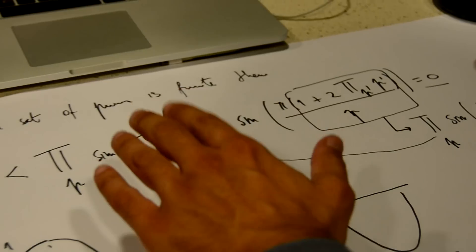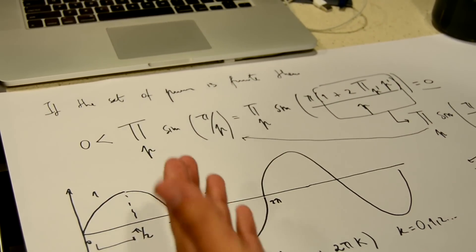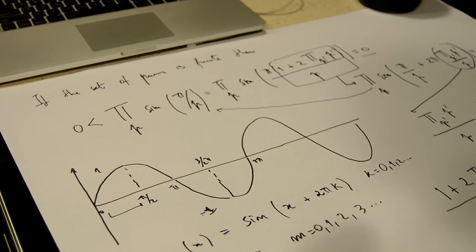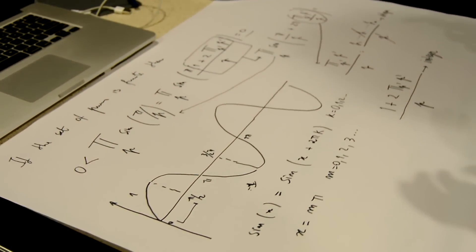And so we have a result that is at the same time zero and greater than zero. Which proves that the set of prime numbers cannot be finite, and there must be infinitely many prime numbers.